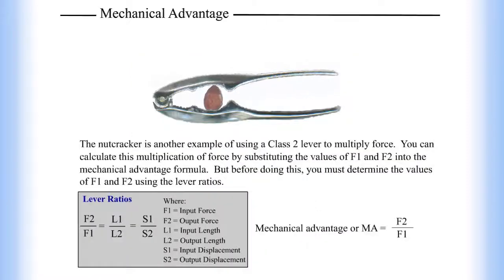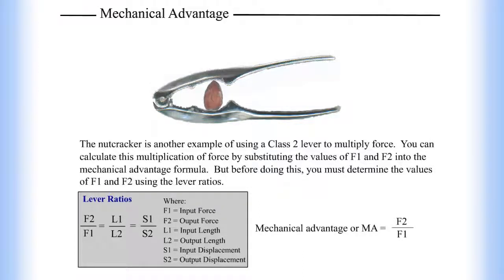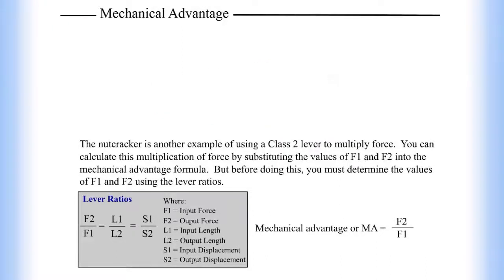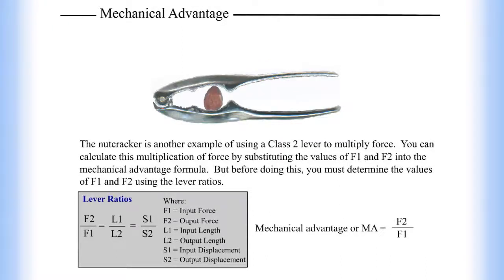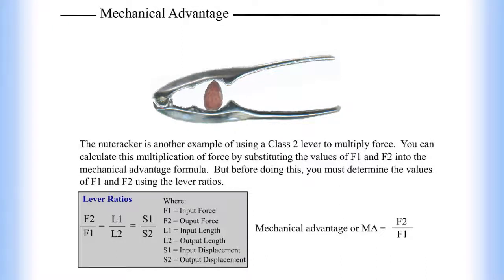The nutcracker is another example of using a class 2 lever to multiply force. You can calculate this multiplication of force by substituting the values of F1 and F2 into the mechanical advantage formula. But before doing this, you must determine the values of F1 and F2 using the lever ratios, where F1 equals input force.